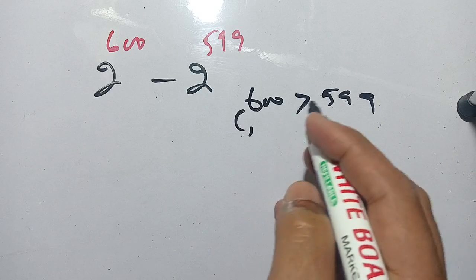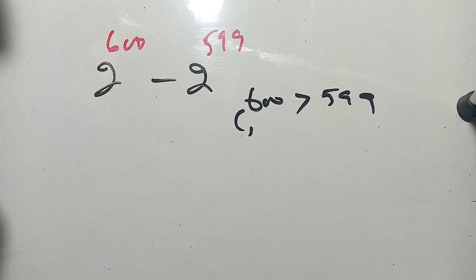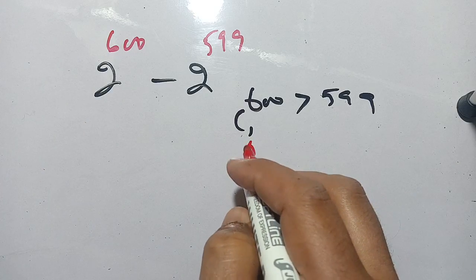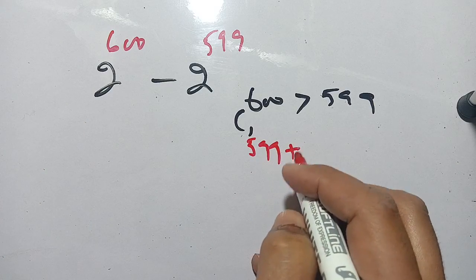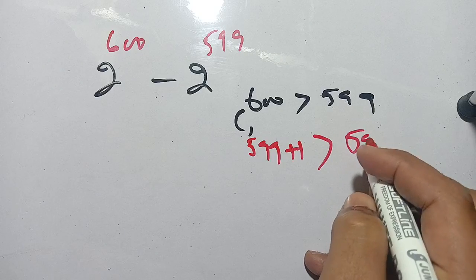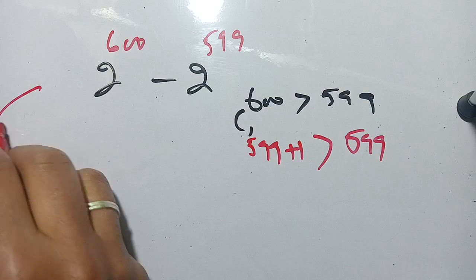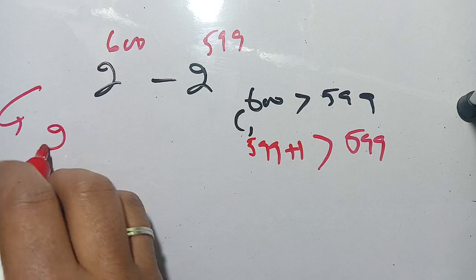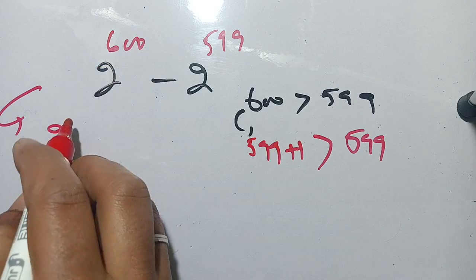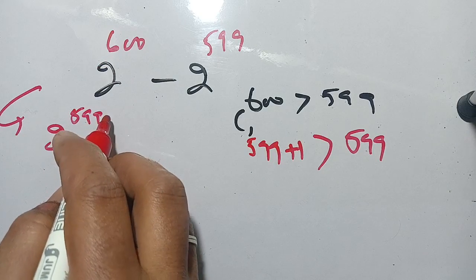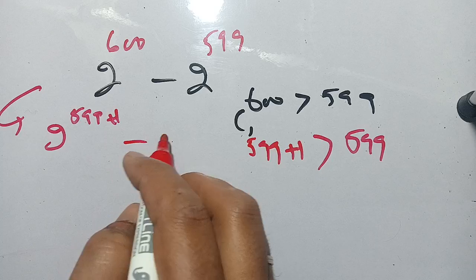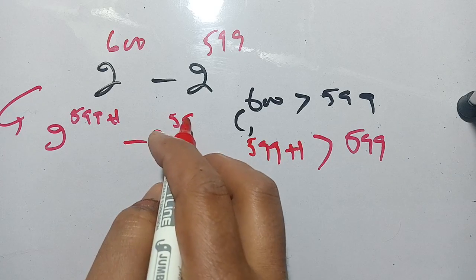600 can be written in terms of 599. It is equal to 599 plus 1. Now we can write this as 2 raised to power 600, which can be written as 599 plus 1, minus 2 raised to power 599.